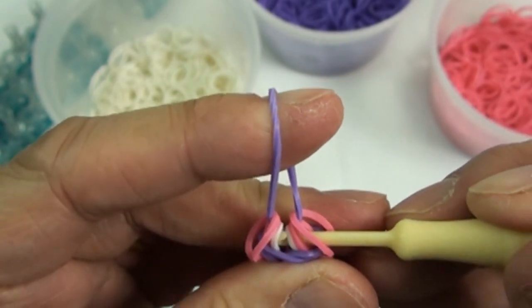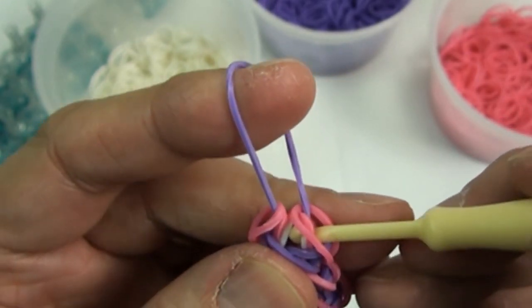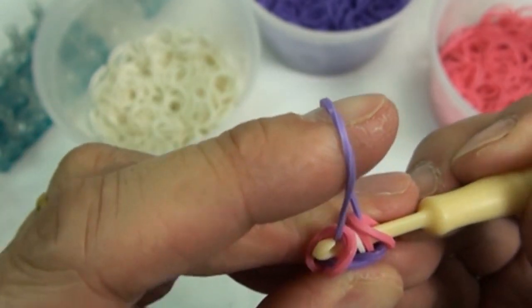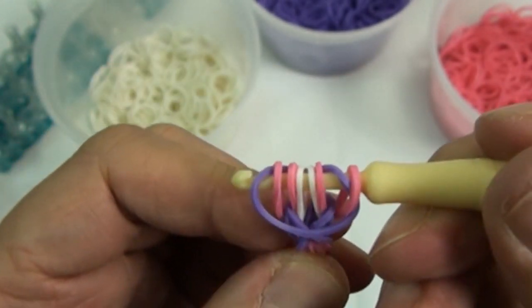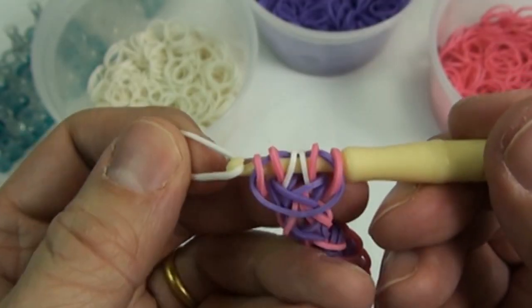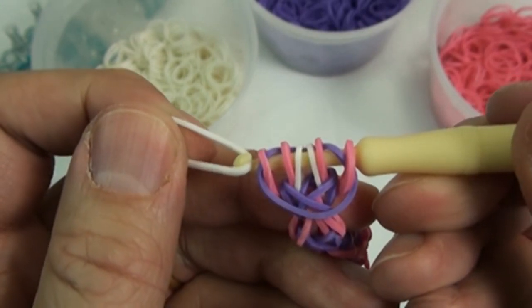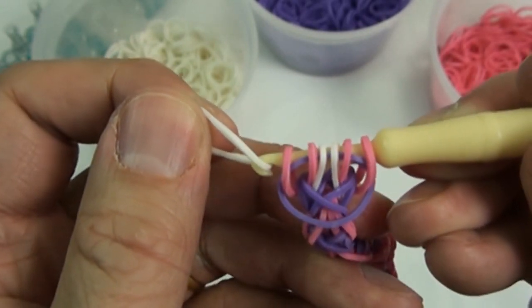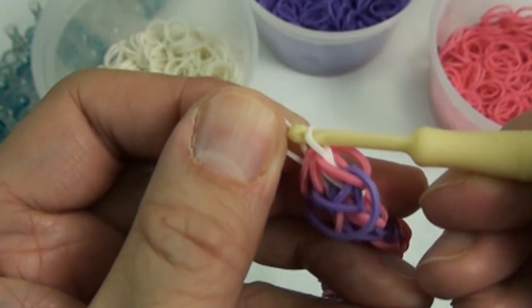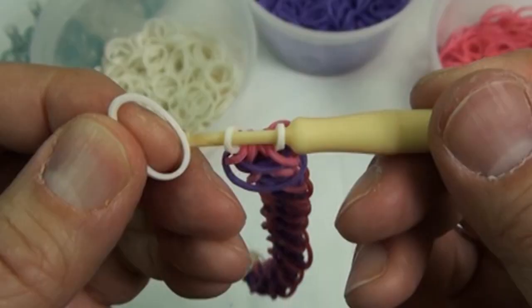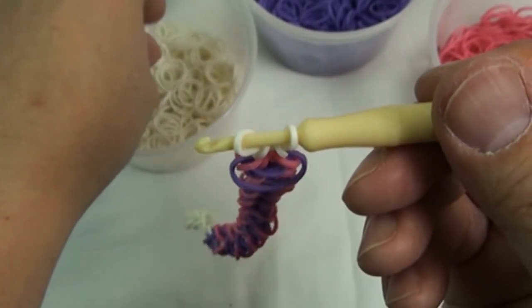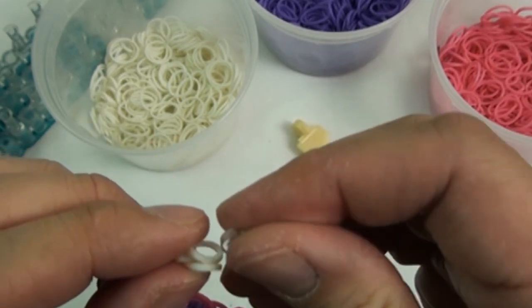We will do the same to the other end of the bracelet. Stick the hook through the open loops of the rubber bands. Make sure that you got all the rubber bands and then put the white rubber band, and just like what we did earlier, slip it through like that and then hook it back on. Loop about four to five rubber bands on this side, join with the C-clip.